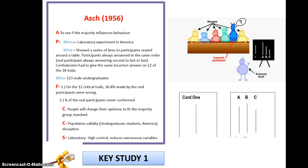Our key study here by Asch — I've summarised it as much as possible in terms of the APFCC. The last two, criticisms and strengths, are focused on population validity and the strengths in terms of being a laboratory study, having high control, and reducing extraneous variables. Asch is the only study I'm going to use for conformity, and I'm going to use him time and time again, including his variations later on down the line.